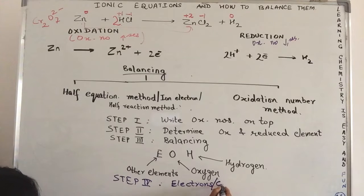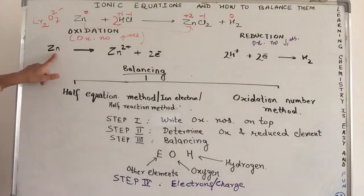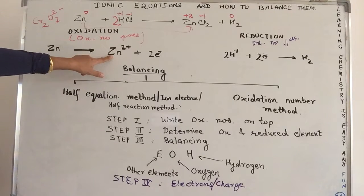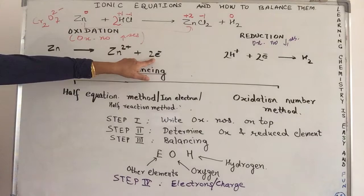And that step 4 would be to equalize the electrons. So, we can also say the charge on each side. So, what we've got over here is, Zn changing to Zn2 positive. That means, in the event it loses 2 electrons.